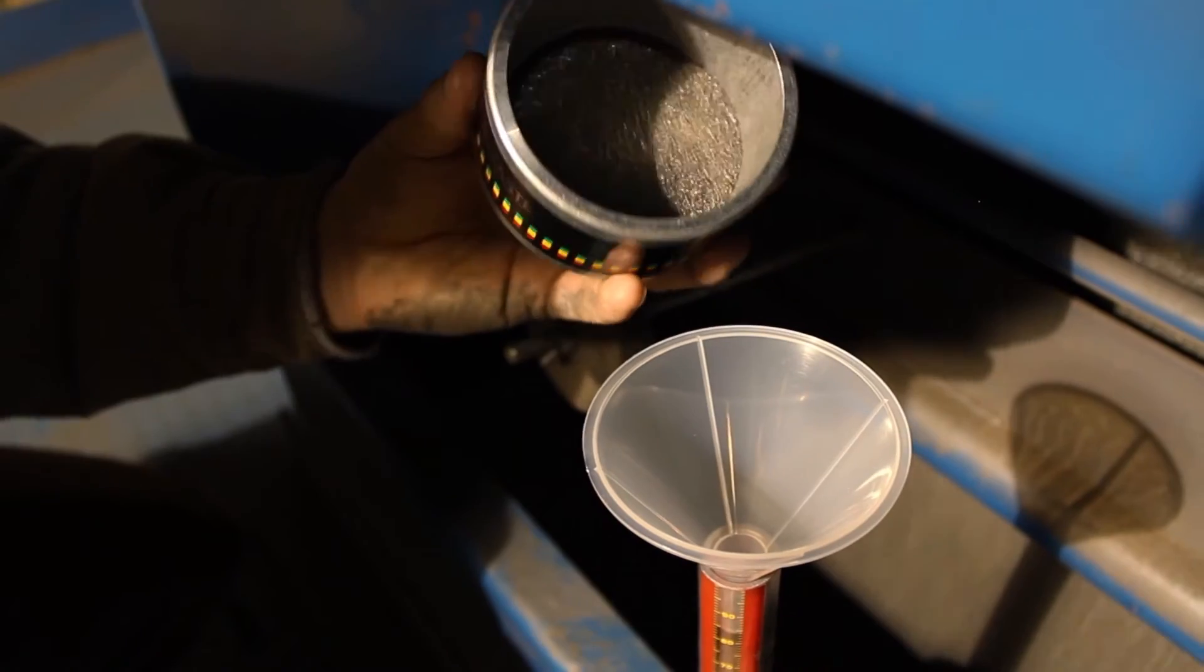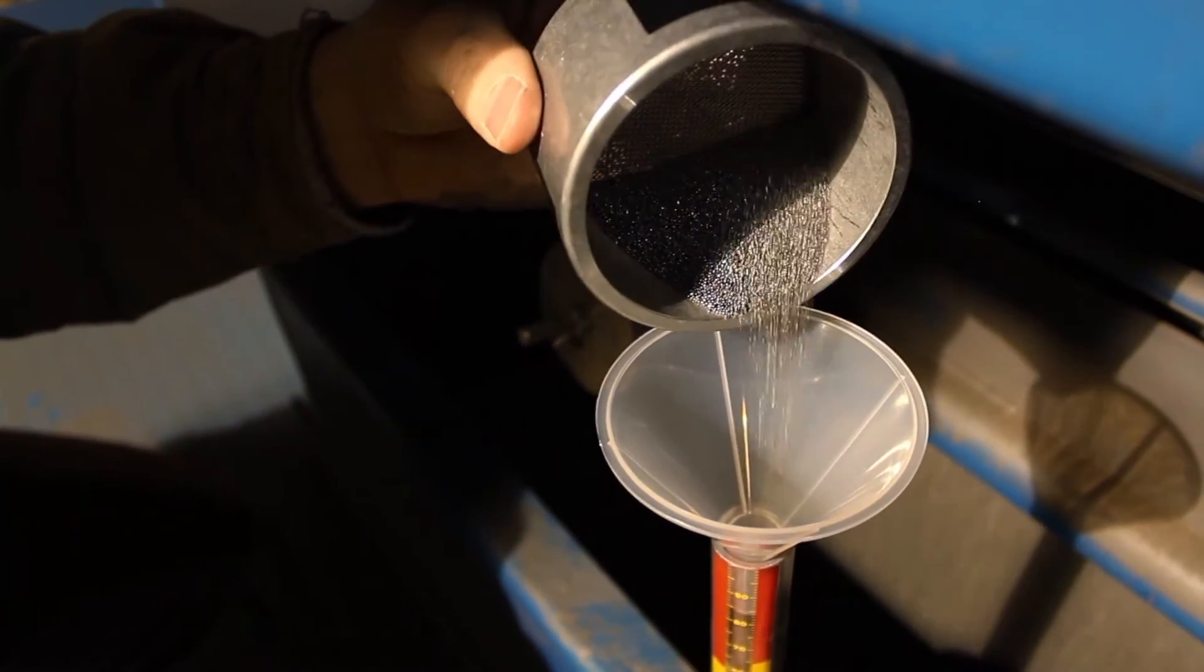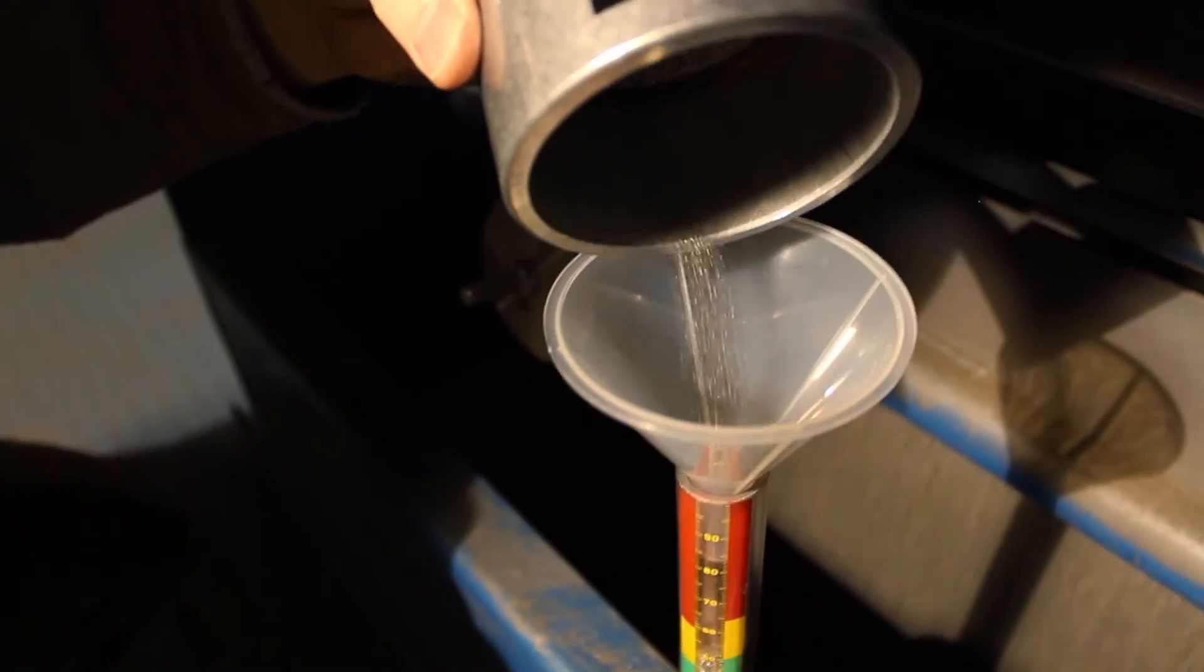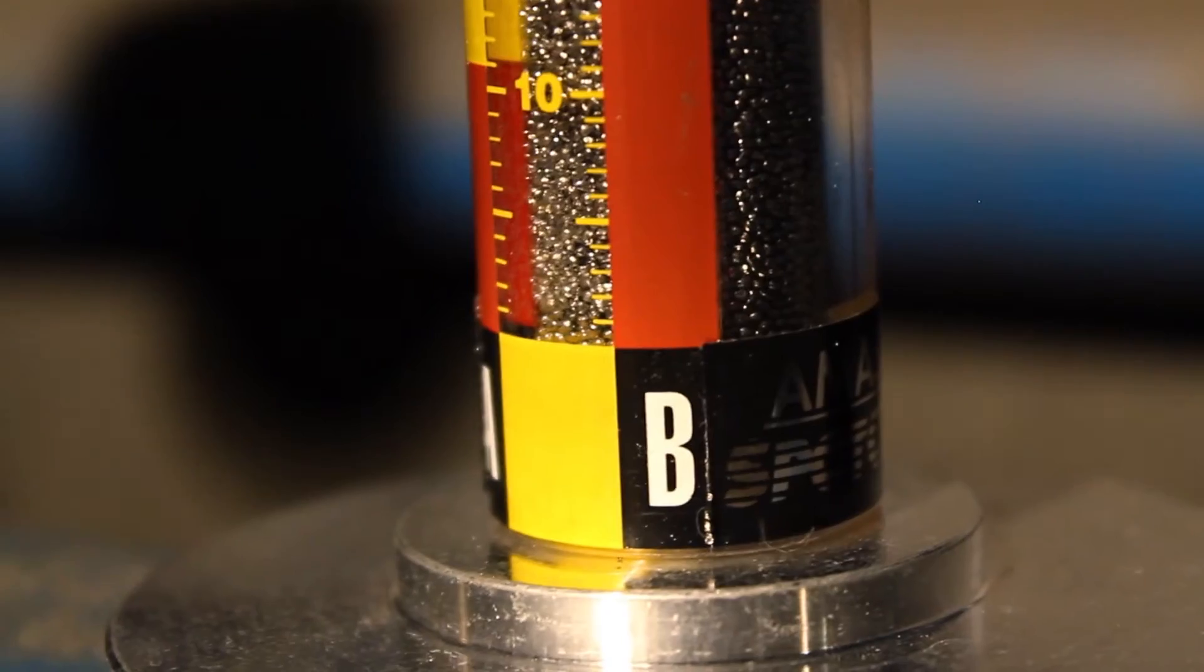Insert the funnel into the empty graduated cylinder. Pour the remaining shot or grit from the sieve cup into the funnel. Visually inspect the level of product in the graduated cylinder.